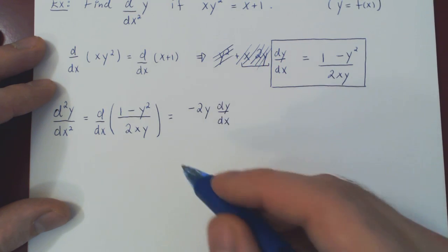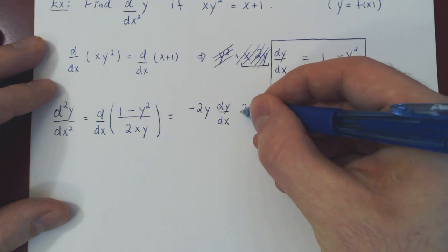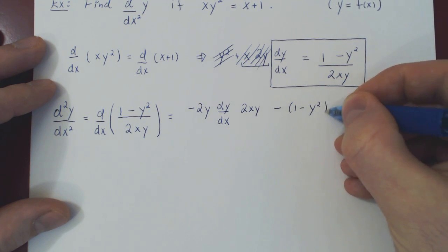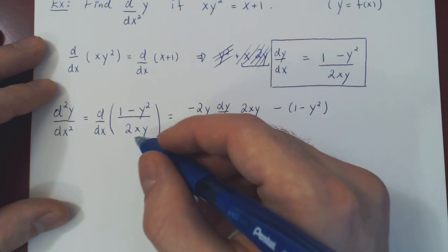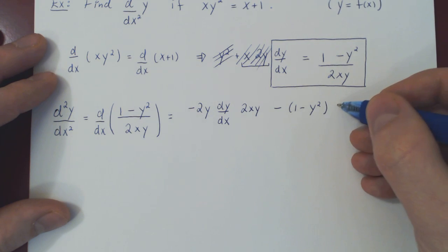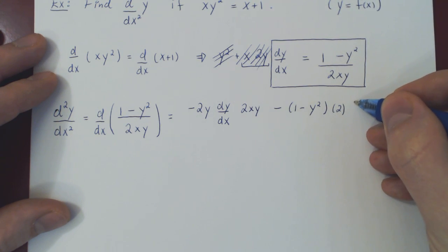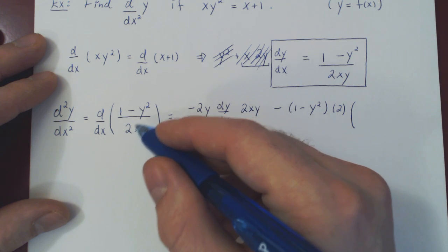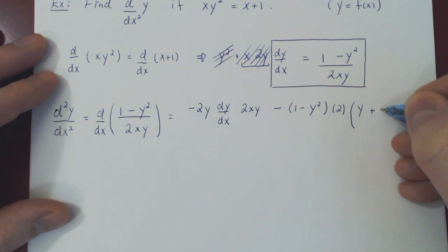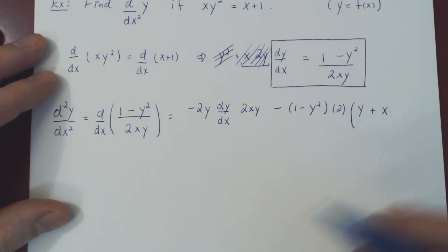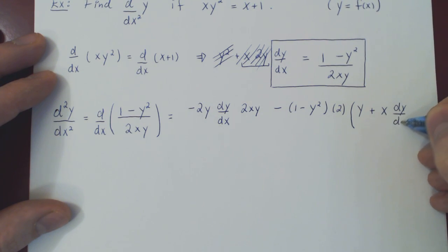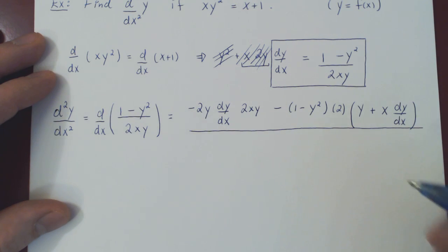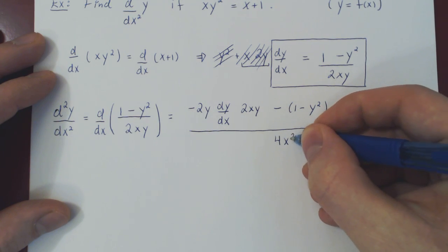The derivative of our numerator times the denominator 2xy, minus the numerator (1 minus y²) times the derivative of our denominator — 2 being a constant multiple, we leave it out front — times the derivative of x times y. Here we have a product again, so we apply the product rule: derivative of x is 1 times y, plus x times the derivative of y, which is dy/dx. The whole thing is over (2xy)², which is 4x²y².